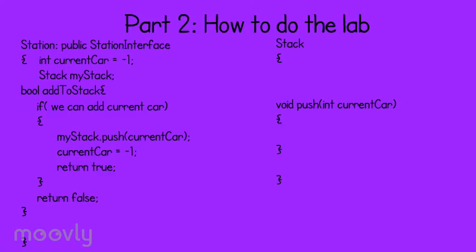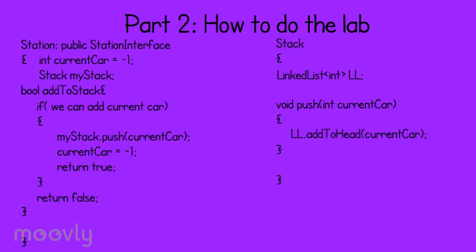After the current car is pushed onto the stack, we'll reset our current car to negative one. Moving over to our stack class — our stack class should have a linked list inside of it. We will refer to the linked list as ll. In our push function, we'll want to call ll dot add to head, passing in the current car. This will be sufficient for our push function. In this lab, it is required to write a main. This will allow you to get experience in testing your own code as well as refreshing your memory on how to write a main.